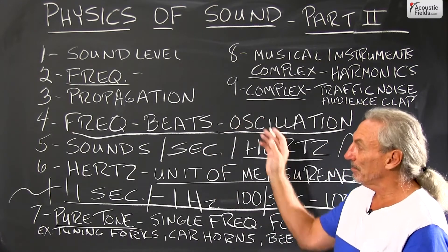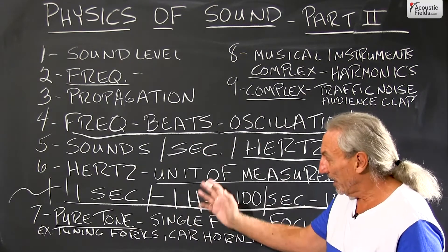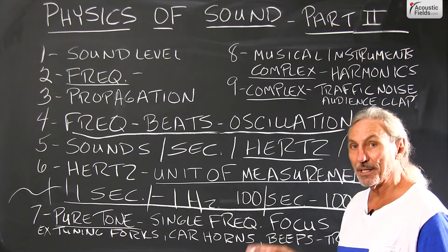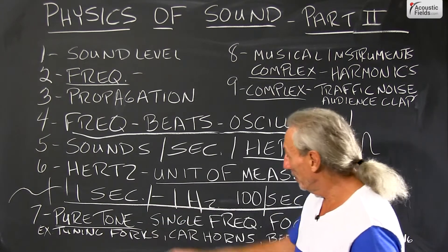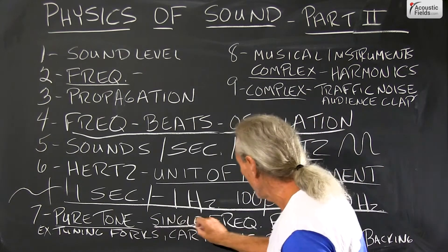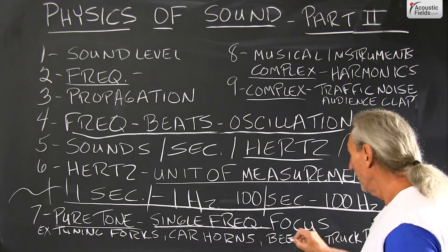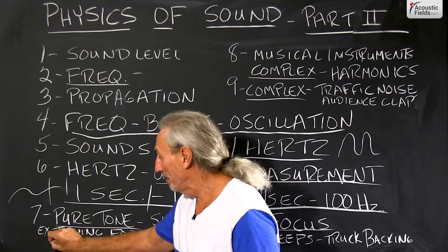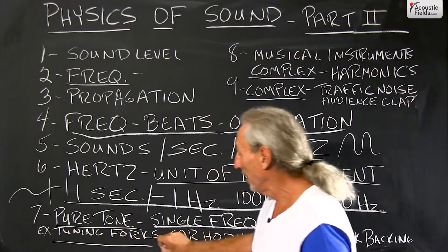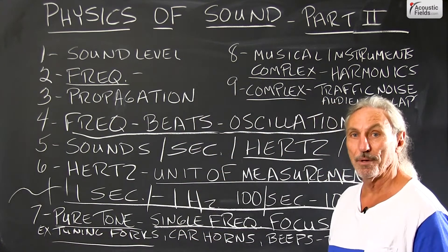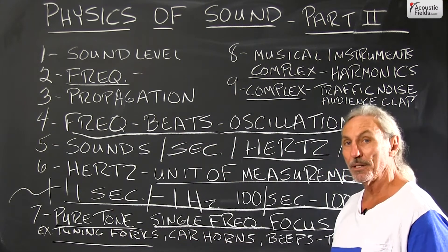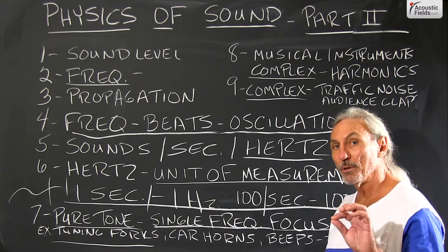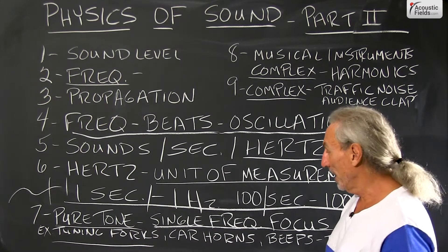Now we take frequency — all of this oscillation and its measurement — and we break it down into tones. A pure tone is a single frequency, so we focus on just one single frequency. A good example of pure tones? Tuning forks. All of us who have been in the music business have seen these. Tuning forks oscillate at certain pure tone frequencies.